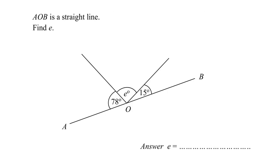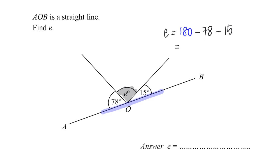Hello everyone, welcome to this part of the video where we are given that AOB is a straight line. Find the angle E. For a straight line, angles add up to 180 degrees. So to find angle E, it is simply equal to 180 minus 78 minus 15, and that will give me a value of 87.